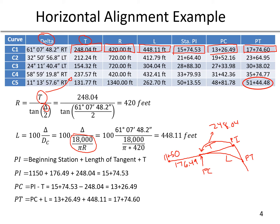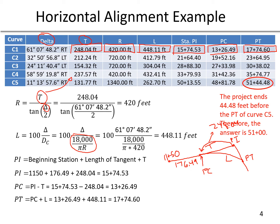We carry that process through the rest of the alignment, through each of the curves, adding the tangents. We end up with a final PT of station 51 plus 44.48. But the problem states the project ends 44.48 feet before the PT of curve 5, so we subtract 44.48 feet from the PT station. That gives us the exact round number of station 51 as the final answer — the endpoint of the alignment.